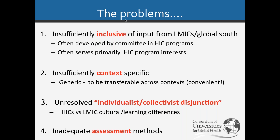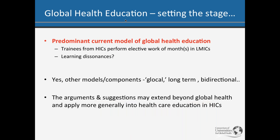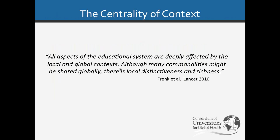The fourth controversy is that the methods of assessing competencies are deficient. This discussion pertains predominantly to the model where students are sent from high-income countries to work in low-income countries, where certain learning dissonances occur. He acknowledges other models of global health—local, long-term, bi-directional—and notes that some of these controversies are also more generally applicable in health professional education. The centrality of context was laid out in the seminal Lancet document of 2010, which stated that all aspects of the educational system are deeply affected by local and global contexts.